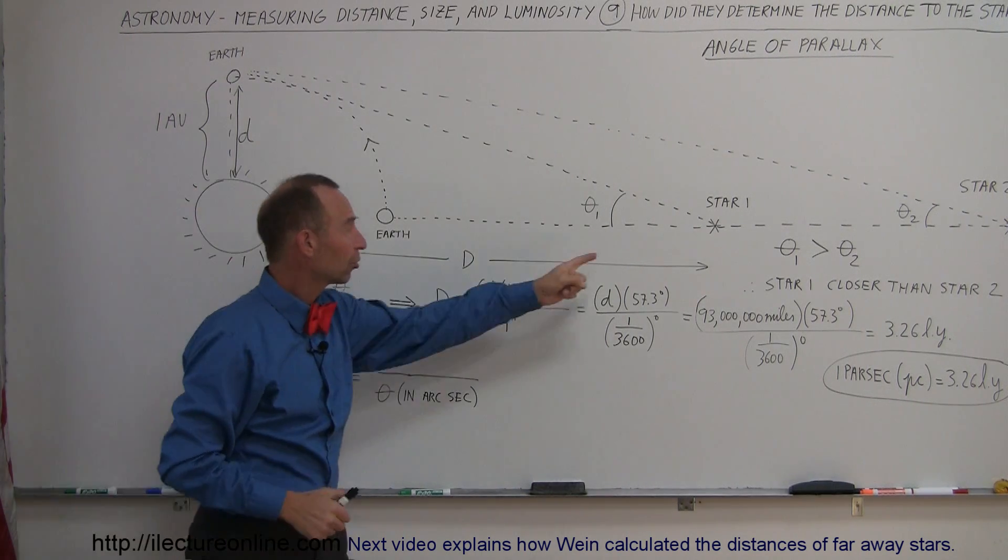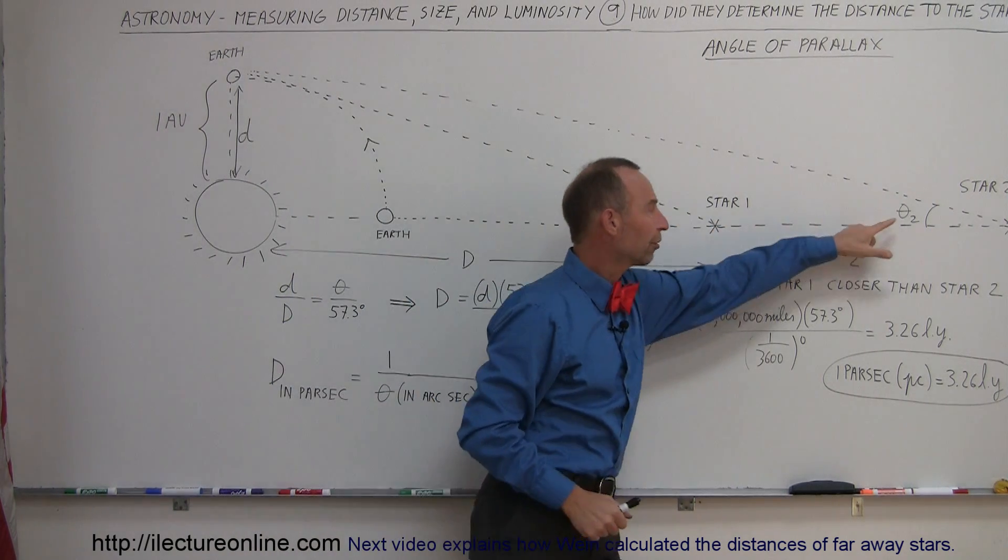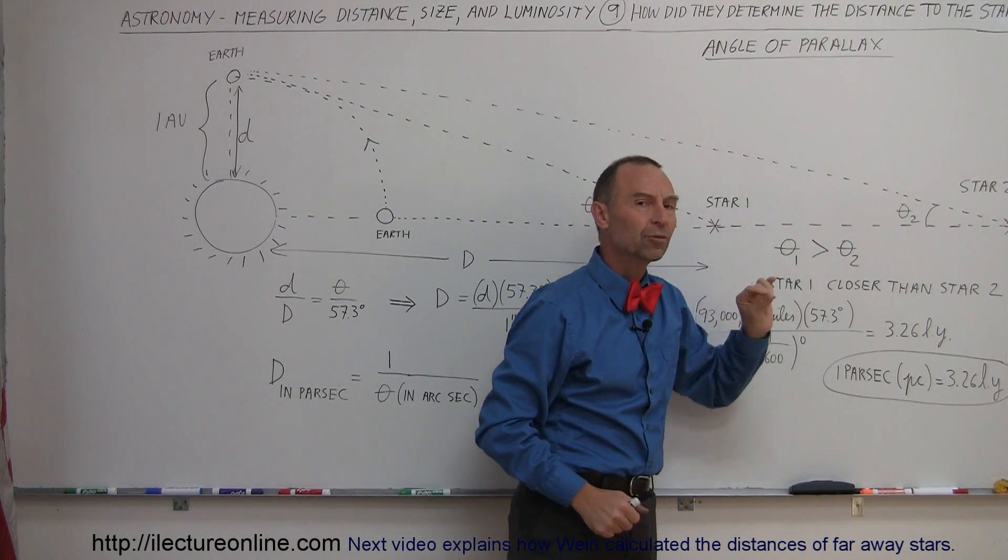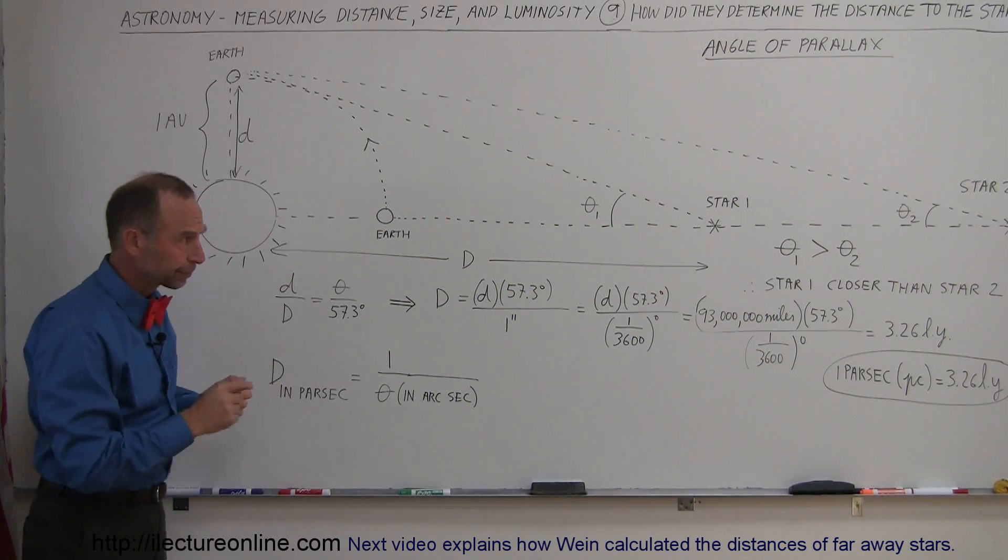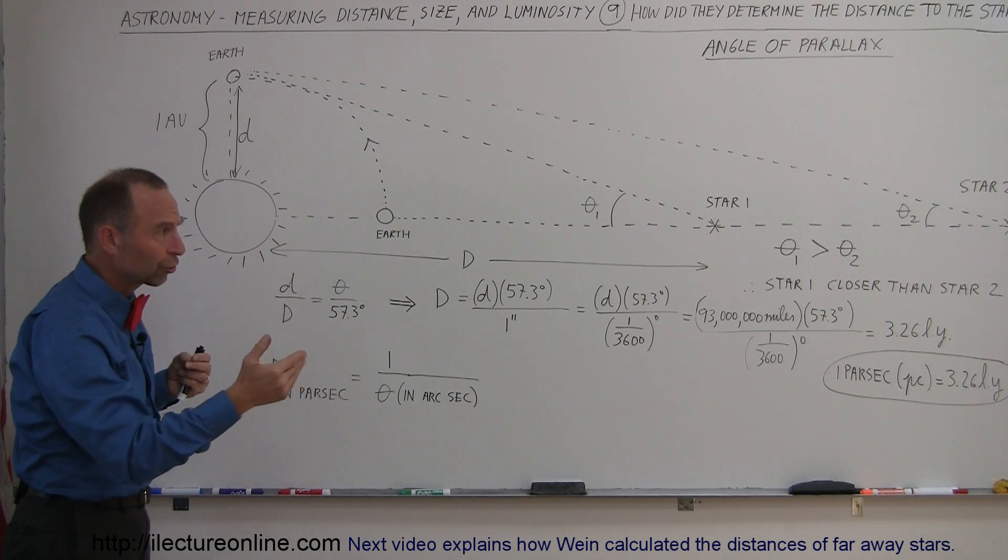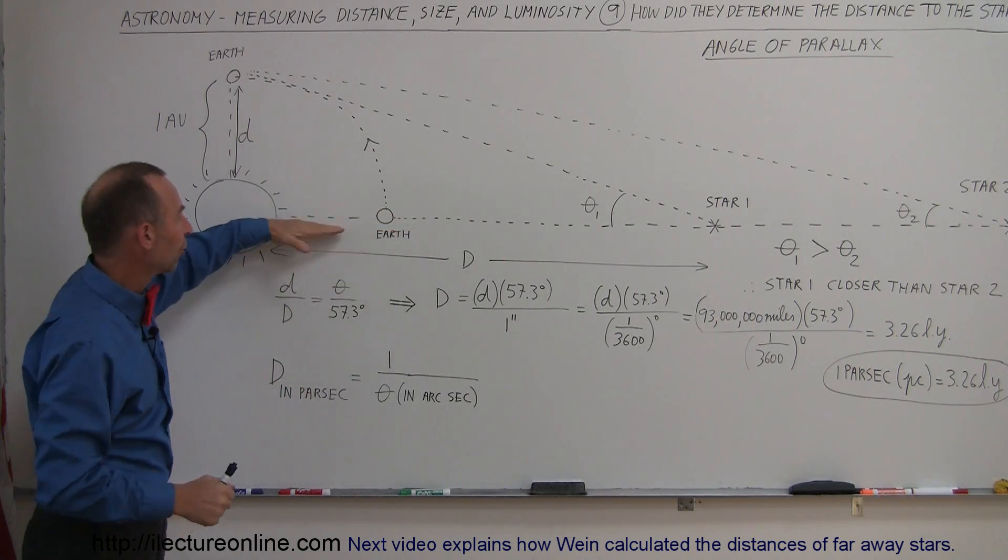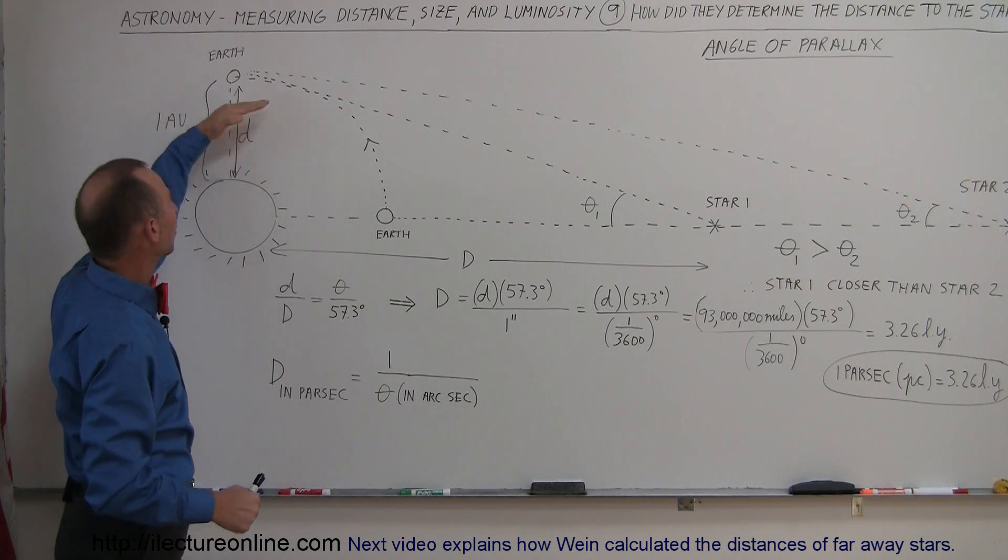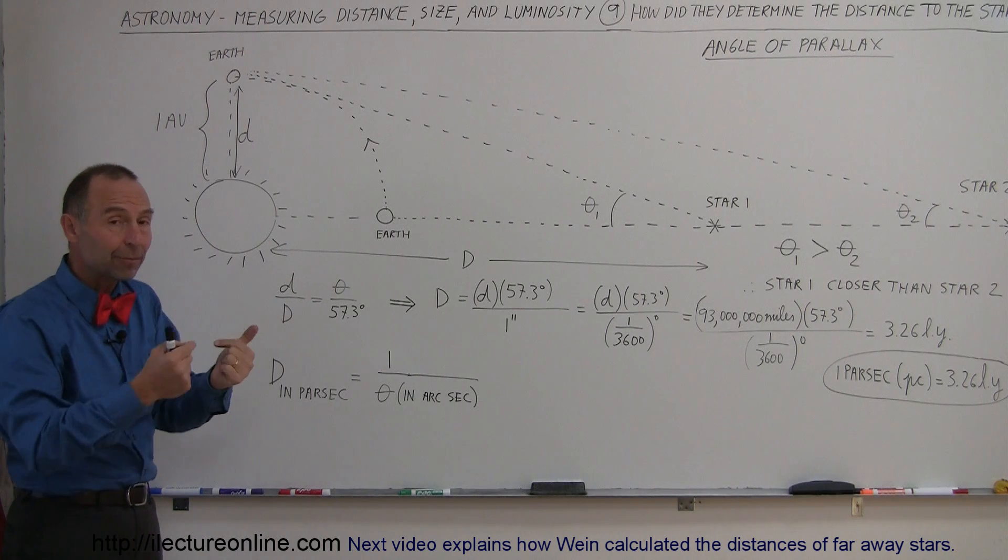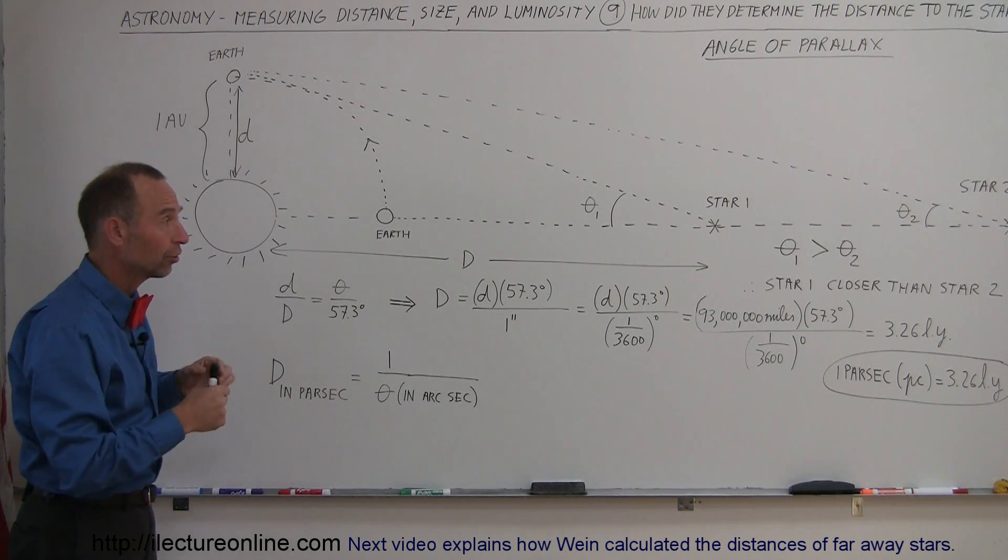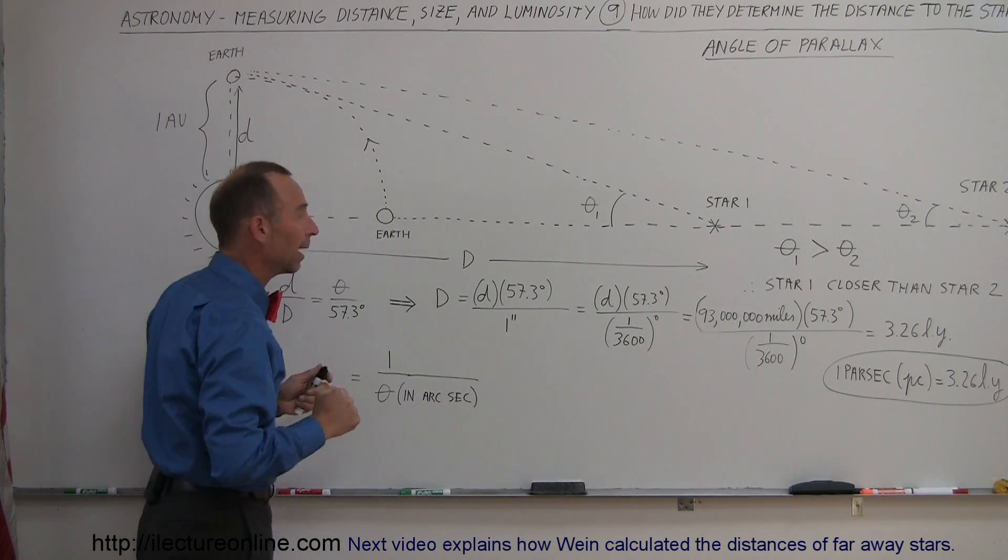Also notice that when the stars are closer, the angle of parallax would be bigger. If the stars are farther away, the angle of parallax will be smaller. And that would be the key to understanding how far these stars were. All they would have to do is observe the position of the stars at this time, position of stars at this time, then measure the angle of parallax, and then from that they would be able to calculate the distance to those stars, understanding that the distance between the Earth and the Sun was 93 million miles.